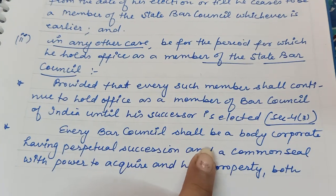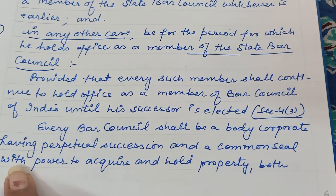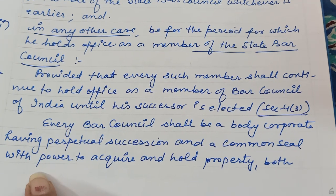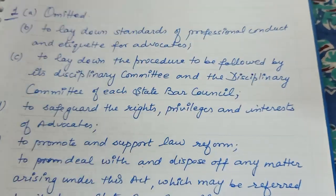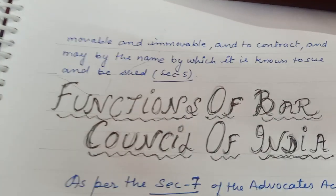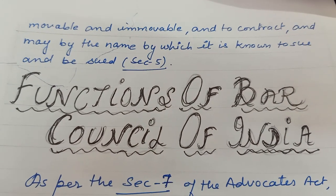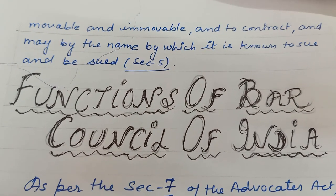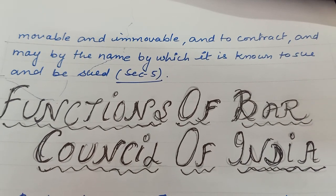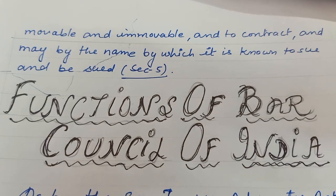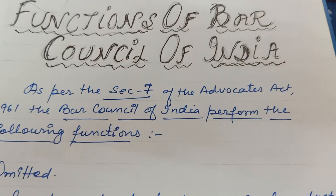Every bar council shall be a body corporate having perpetual succession and a common seal, with power to acquire and hold property — movable and immovable — and to contract. Bar council yeh property hold bhi kar sakti hai, sue bhi kar sakti hai, aur sue ho bhi sakti hai.